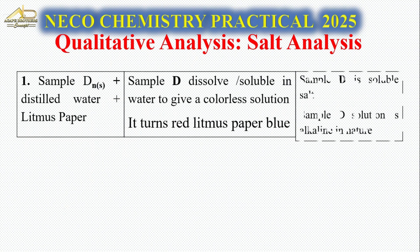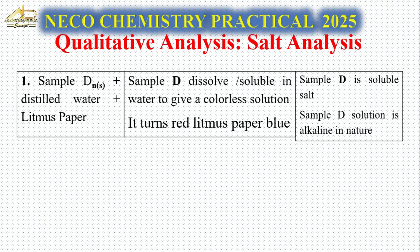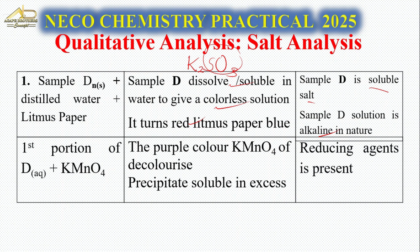Now let's move to salt D, which is K₂SO₃. We are expecting SO₃²⁻. Salt D plus distilled water plus litmus: it dissolves to give a colorless solution, and it turns red litmus paper blue. So salt D is soluble in water and is alkaline.